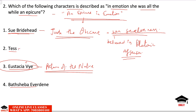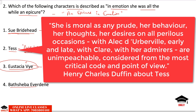Tess is the eponymous character of Tess of the D'Urbervilles. Hardy names her 'a pure woman,' also called 'the standard woman' — the most unfortunate of Hardy's female characters. Though she possesses purity of spirit and strong morals, critic Henry Charles Steffen says about her: 'She is moral as any prude. Her behavior, thoughts, desires on all perilous occasions — with Alec D'Urberville and with Clare — are unimpeachable, considered from the most critical point of view.'